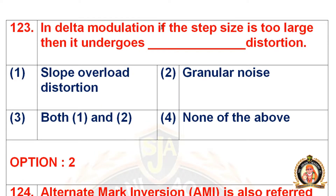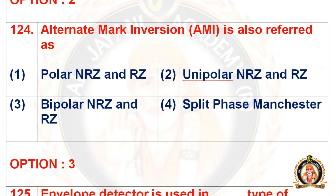Question 123: In delta modulation, if the step size is too large then it undergoes dash distortion. Options are slope overload distortion, granular noise, both 1 and 2, and none of the above. The right option is the second one, that is granular noise. Similarly, if the step size is too small then it undergoes slope overload distortion.